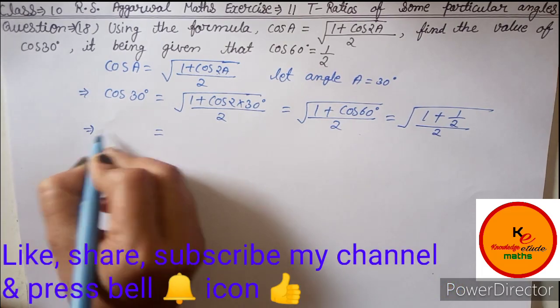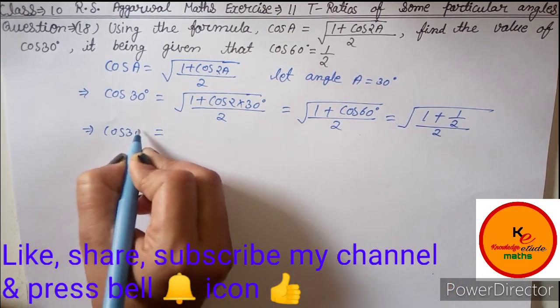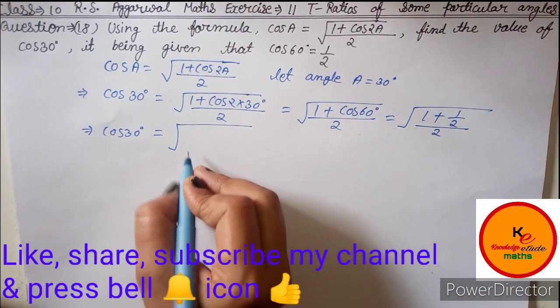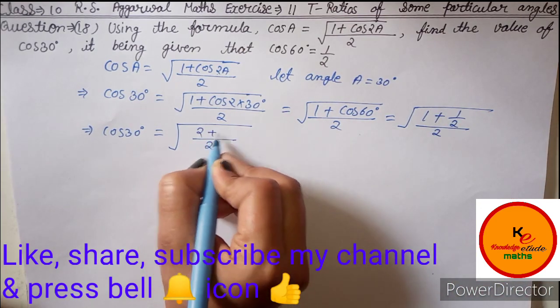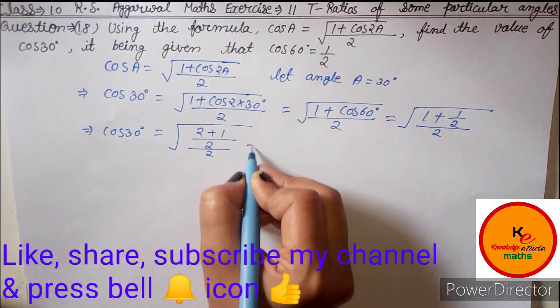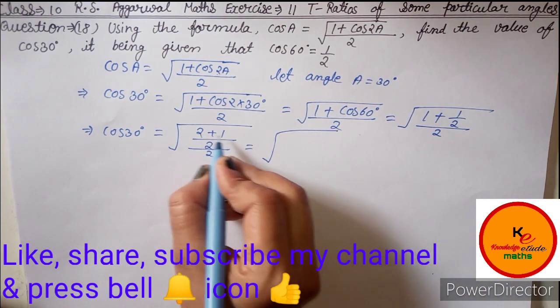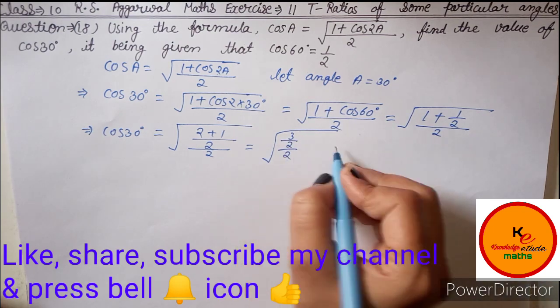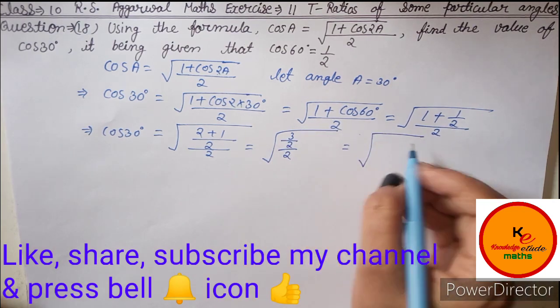Then we write cos 30 degree is equal to under root of, if we take LCM it will be 2, so this becomes 2 plus 1 upon 2. Then under root of 2 plus 1 is 3 upon 2 upon 2.